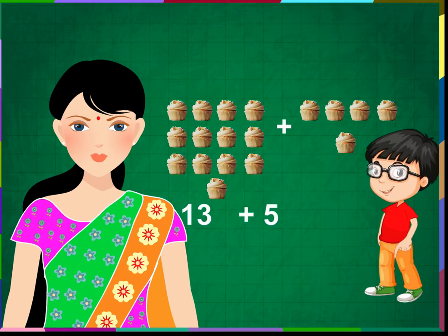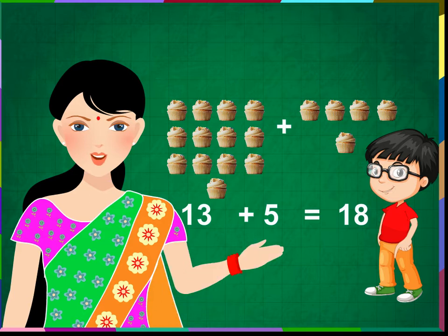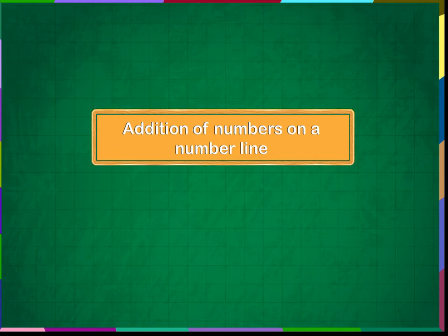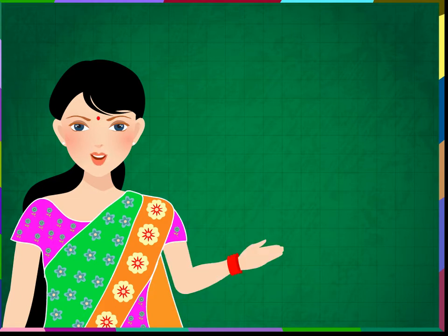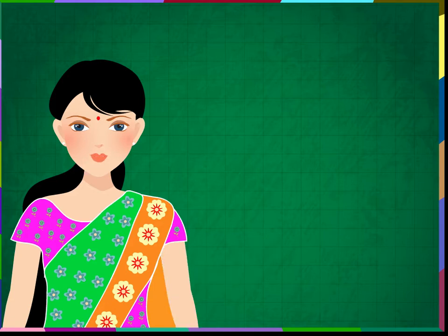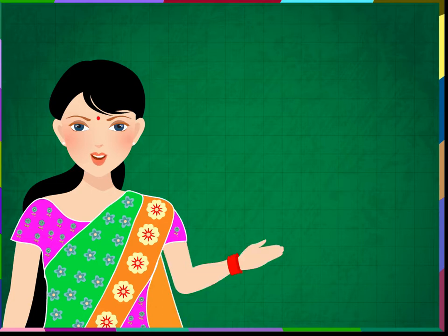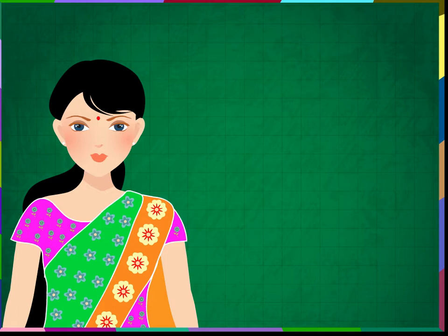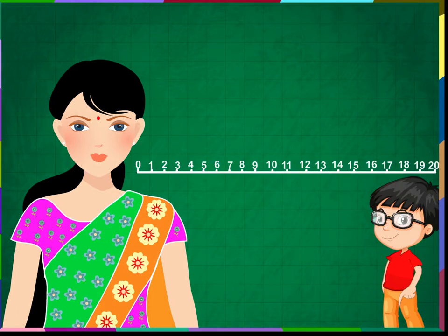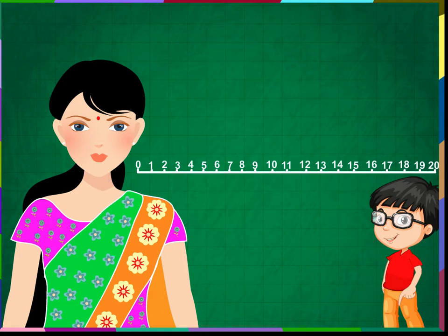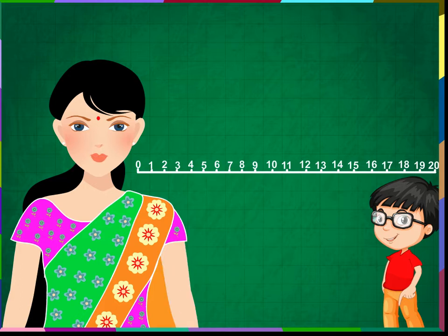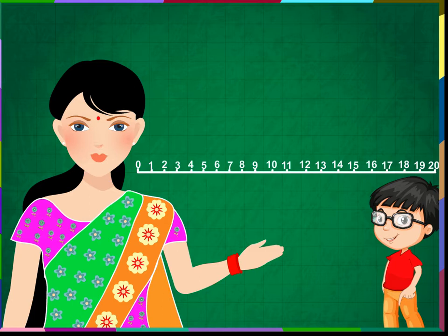13 and 5 make 18. Very good, students. Addition of numbers on a number line. We have already done number line addition with very small numbers. Now we are going to learn the same with bigger numbers. A straight line with numbers starting from 0 in equal gaps is called a number line. Observe the number line on the screen — it has numbers from 0 to 20.